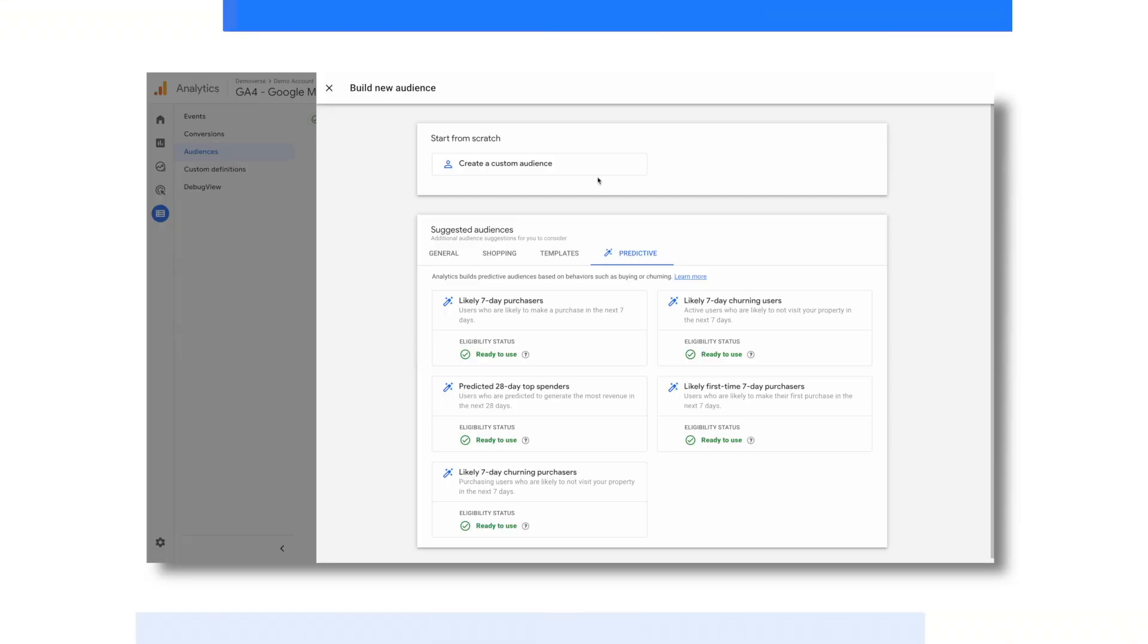For example, you can easily create an audience of users who purchased multiple times or visited a specific page, and so on. This makes audience segmentations much easier and more actionable than ever before. We'll walk through a basic audience example that looks for users who first came to the Google Merchandise Store through an organic search.